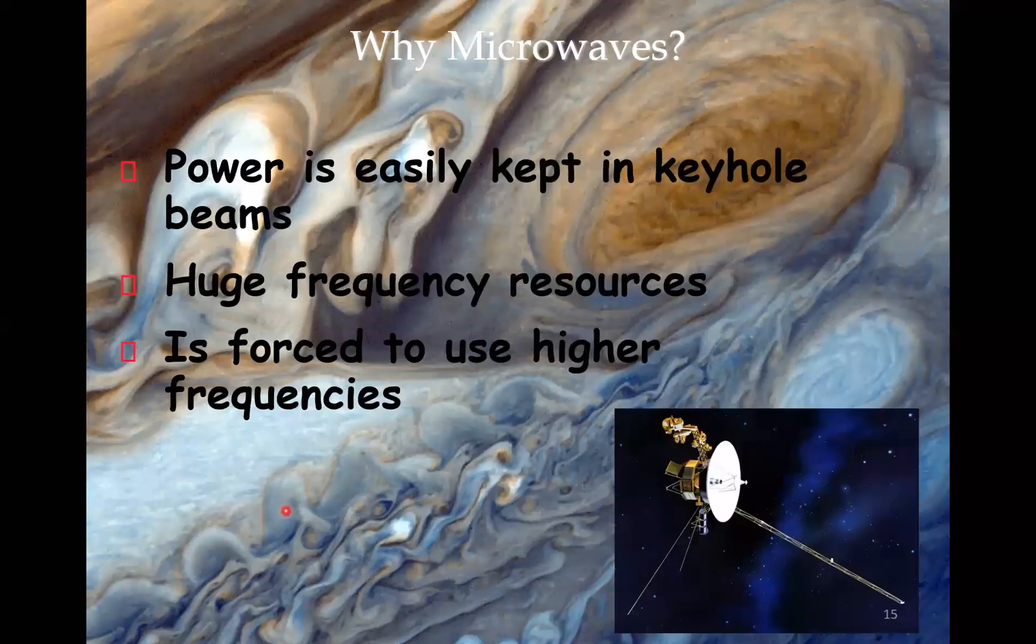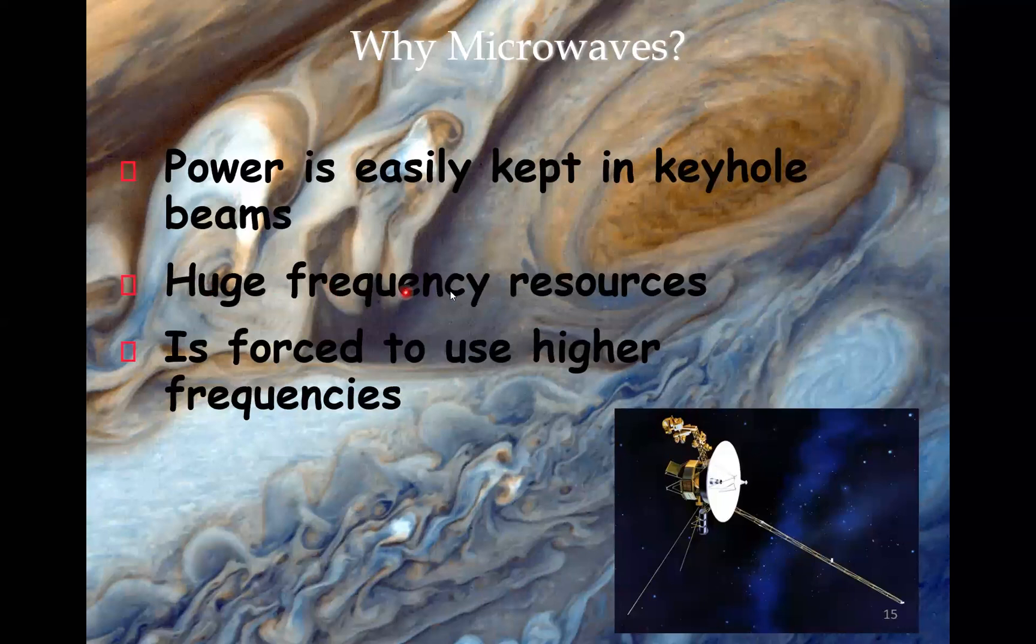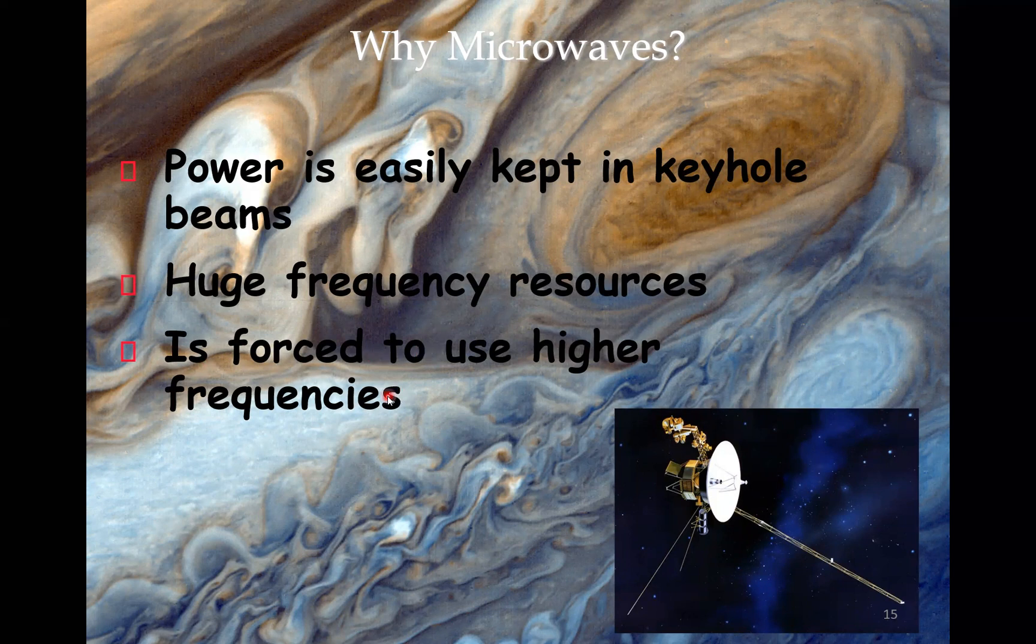So why do we use microwaves? Well, the power is easily kept in keyhole beams. You see here, for instance, this is Voyager 1. It has a microwave antenna. And the reason why is that it can send the energy back to Earth in a small beam. And even though we have huge frequency resources, they are huge when we go to high frequency. And so we are forced to use higher frequency. Most of the lower frequencies are now used for, for instance, mobile communications like telephony and stuff like that. So the radio link has to go to frequencies above 3 gigahertz.